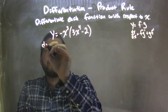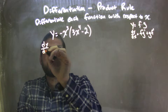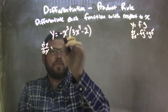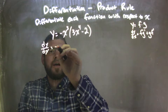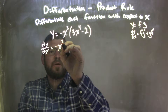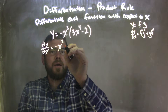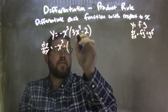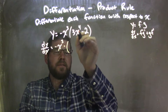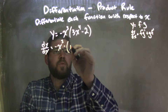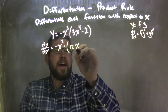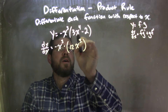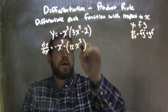So, dy/dx is equal to the first function — the first part of it here — negative x to the third, times the derivative of the second. So the derivative of what's in the parentheses here is 12x to the third. I'm going to apply the power rule there.